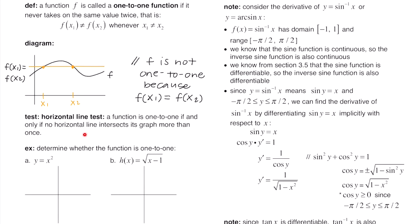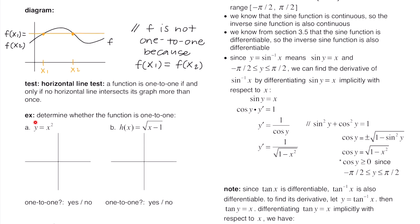We can use the horizontal line test to check whether a function is one-to-one or not. A function is one-to-one if and only if no horizontal line intersects its graph more than once. For the first example, we have y equals x squared. If you draw a horizontal line, it hits the graph more than once at two different x values. Therefore, it is not one-to-one — there are two different x values at which the graph attains the same height.